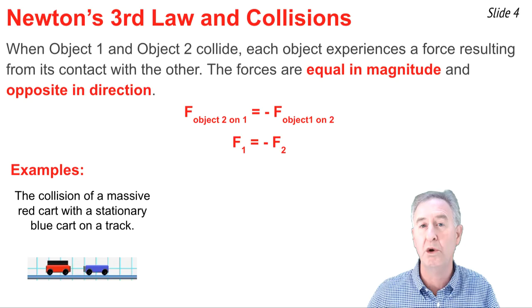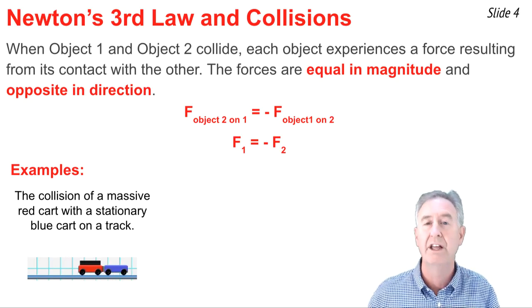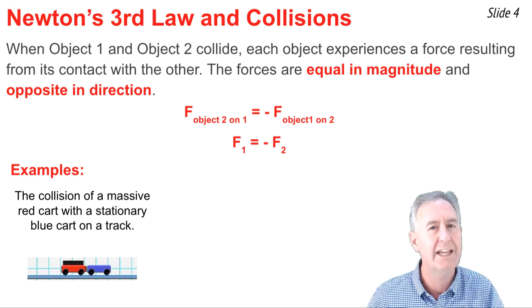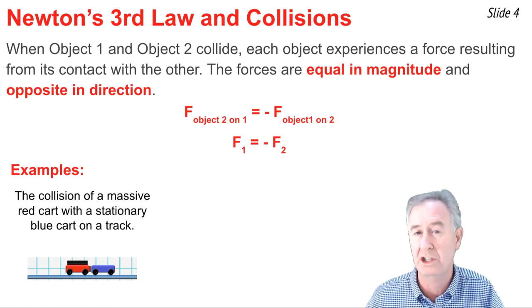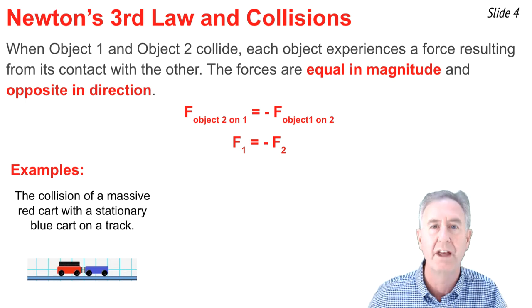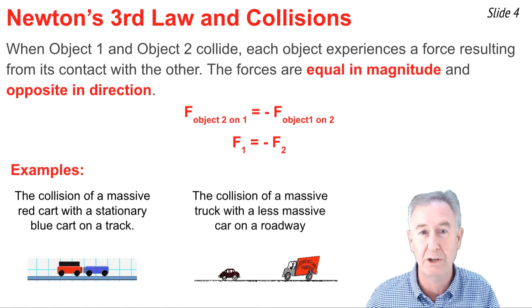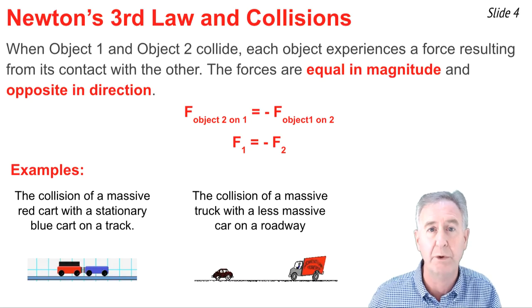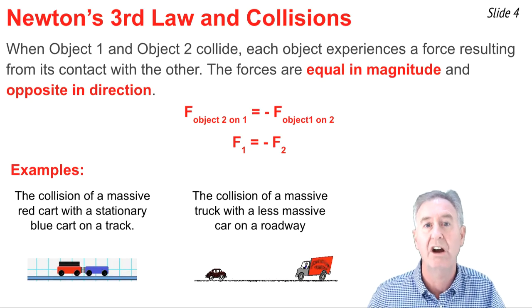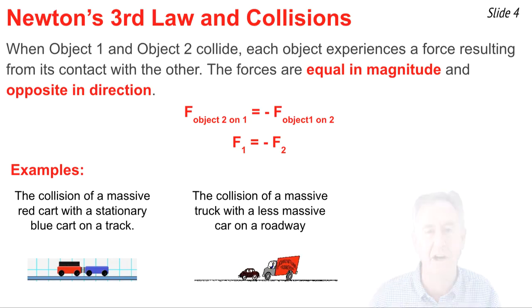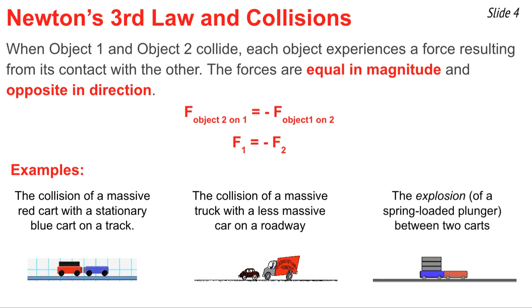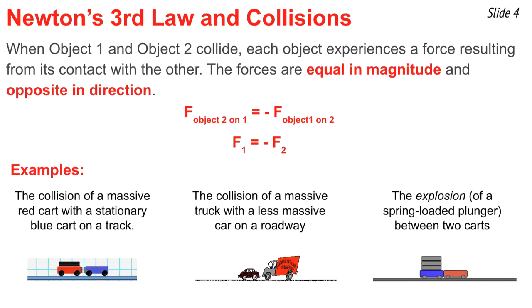As an example, consider the collision of a more massive red cart with a stationary blue cart. The force on the red cart equals the force on the blue cart — it doesn't matter that the blue cart was initially stationary or that the red cart has more mass. The forces are of equal magnitude. Or consider a more massive truck colliding with a less massive car: the forces between the truck and the car are of equal magnitude. It applies to explosions as well. If we put a spring-loaded plunger between two carts and release it, the force on the red cart equals the force on the blue cart. Mass doesn't matter. In every interaction, the forces between the two interacting objects are always of equal magnitude.